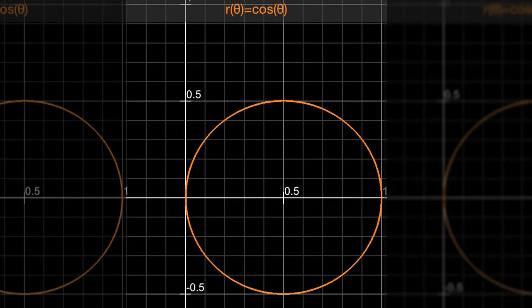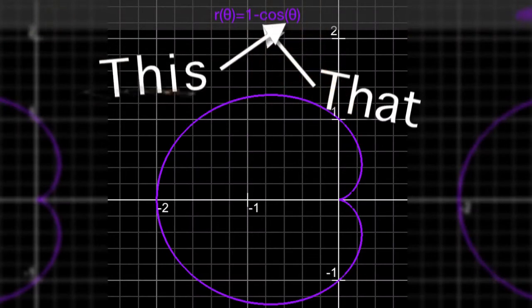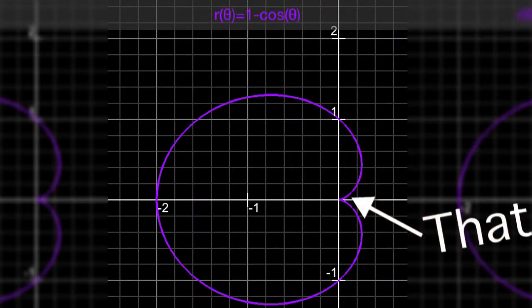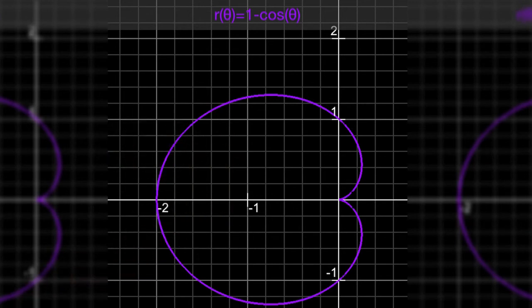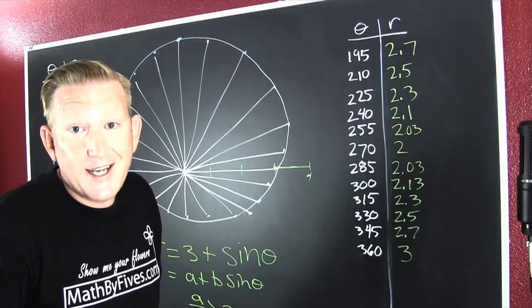1 minus cosine theta - that's a cardioid. Why? Because this matches that, so when cosine is one, that's zero. When cosine is minus one, that's two, and that's why you see that shape there. It's got to have a kink to be a cardioid.